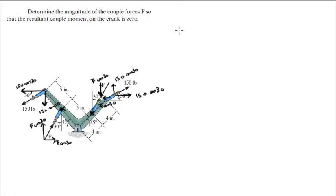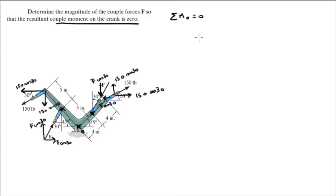Now that you have all those forces, all you have to do is take the sum of the moments at O — I'm calling this point right here O. The sum of the moments at O is equal to zero; they're telling you that the resultant couple moment on the crank is zero. So knowing that, let's calculate the moments.